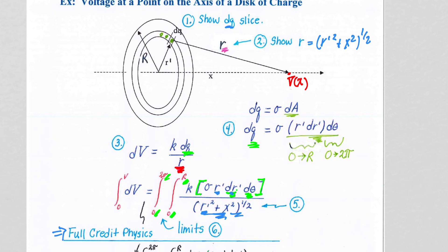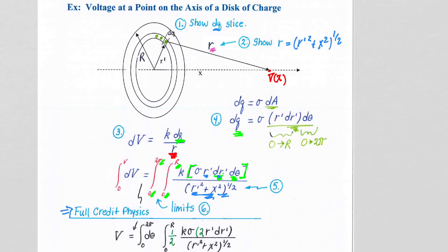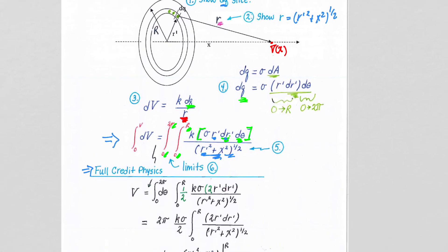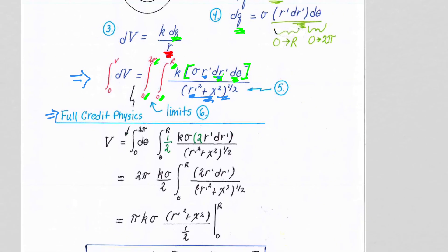If you have this step, the full credit - up to the full credit line, you will get full credit for our physics class. Because there is no more physics to do. It is really all just mathematics. To show you how that mathematics plays out, it's a u sub. So let's see what our u sub actually is.